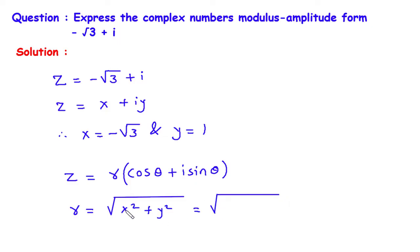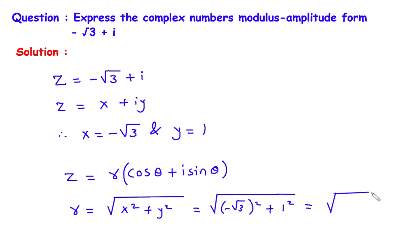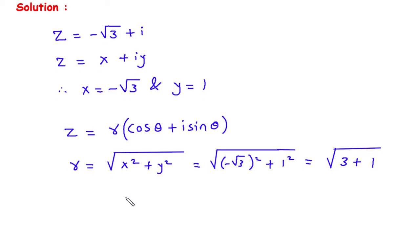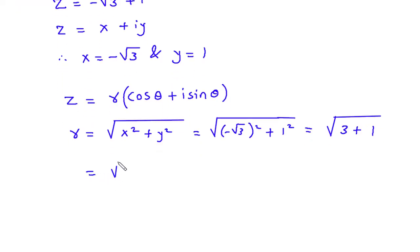Here X squared will be minus root 3 squared, then plus Y squared is 1 squared. Minus root 3 into minus root 3 gives 3, so we have under root of 3 plus 1, which equals under root of 4. This is equal to 2. So therefore R is equal to 2.